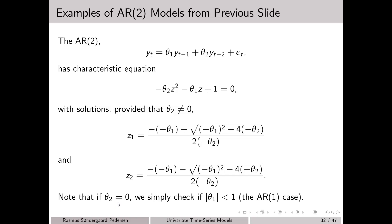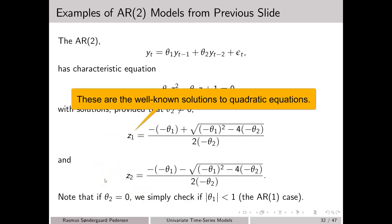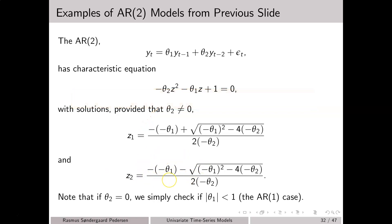For the AR(2) case, we can actually write down the characteristic roots explicitly. z1 and z2 are given by these two equations, and we note that these roots may be complex. In stating these two solutions, we have implicitly assumed that theta_2 is different from 0. If theta_2 is equal to 0, we have an AR(1) model, and in that case we already know that for stationarity we simply need the absolute value of theta_1 to be less than 1.